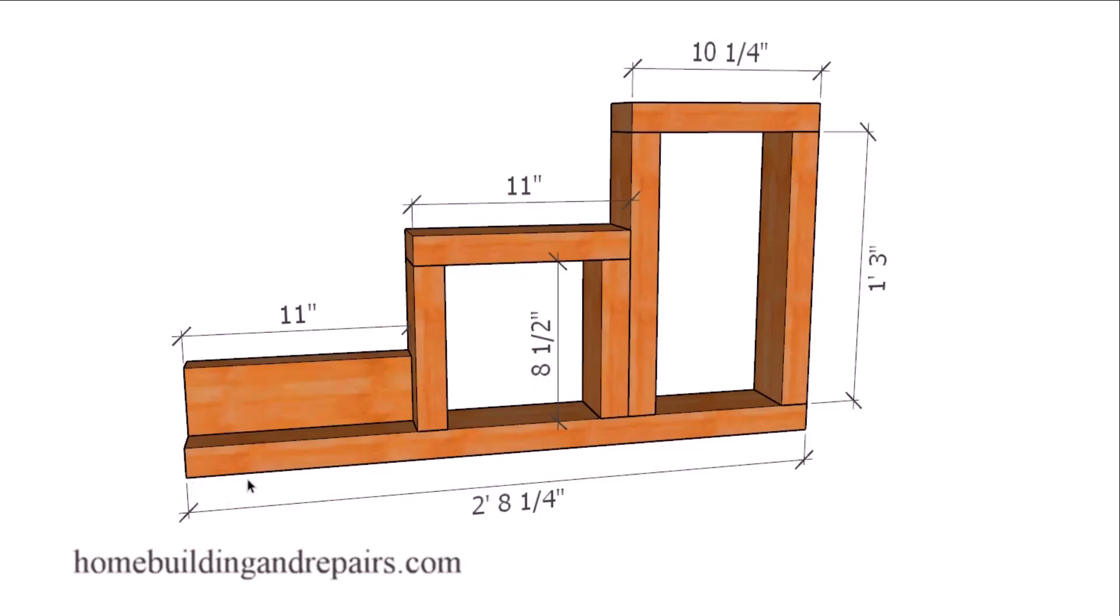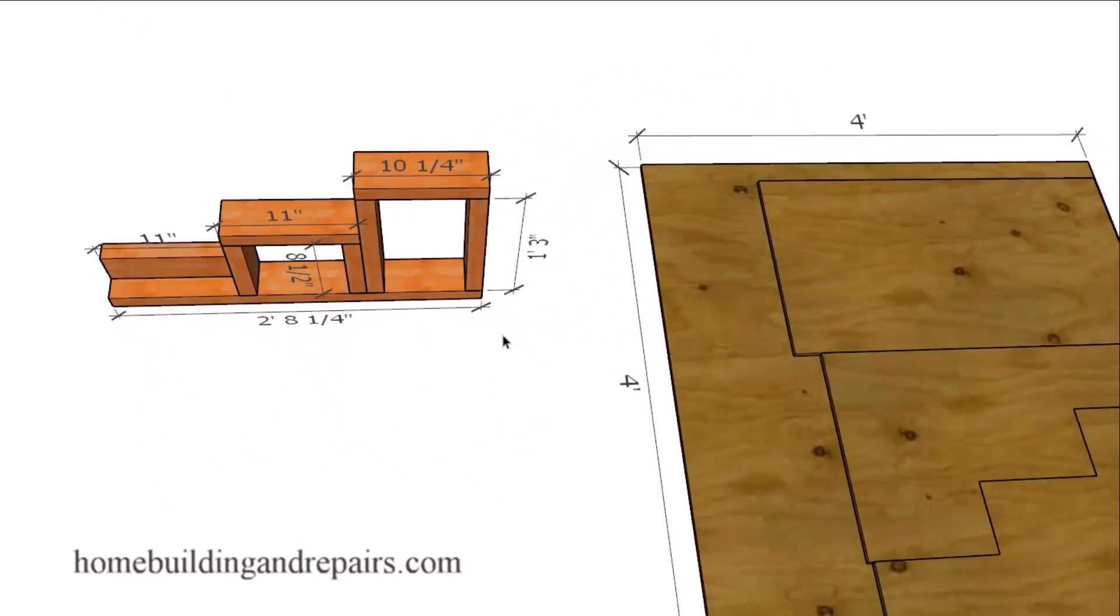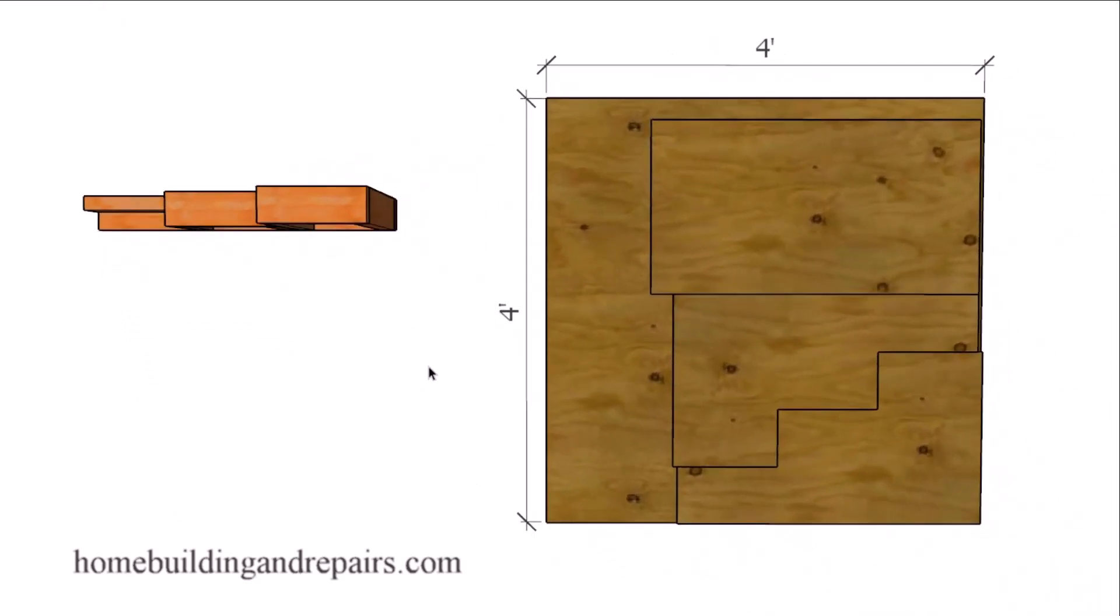These two boards here will be 1 foot 3 inches. And then these two boards here will be 8 and a half inches. And then on the bottom we should have a 2 foot 8 and a quarter inch board. I would also like to point out that I am designing this with my program and it is quite accurate. However, I have not built this particular set of stairs. So feel free to let us know if there are any problems with the measurements.